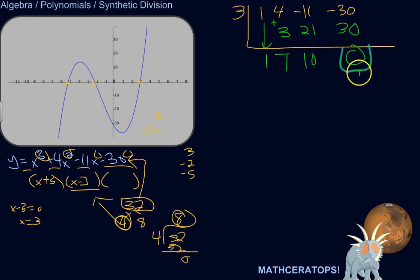Okay, that last term is going to be the remainder. So I have a remainder of 0 for this root of 3. Therefore, x minus 3 is a factor. So 3 is a root. That works. And x minus 3 is a factor.